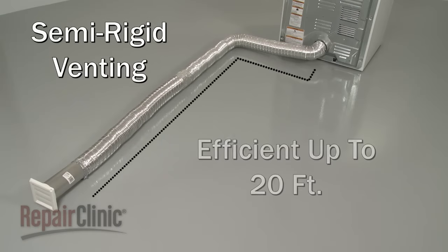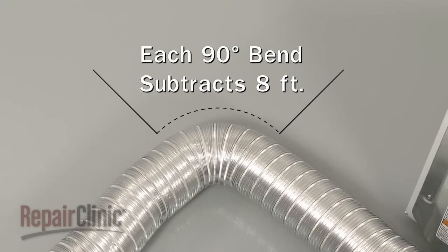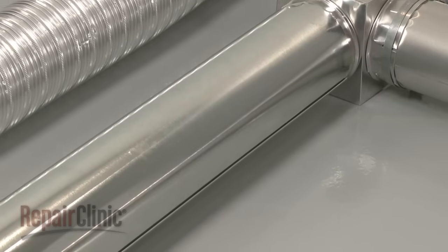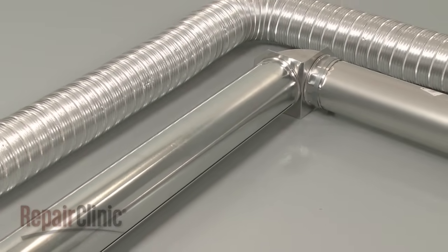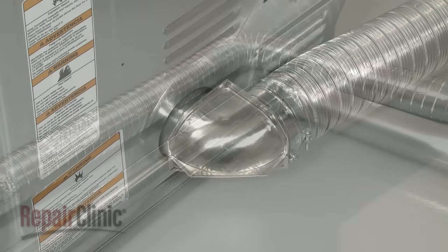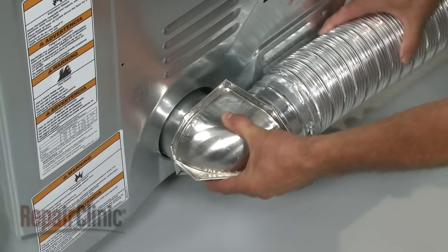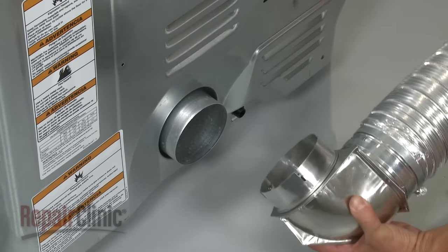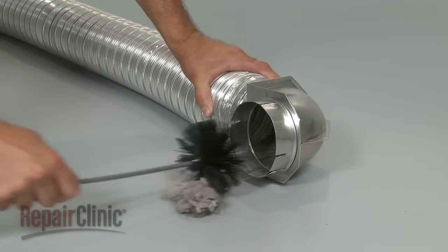This type of material is usually efficient up to 20 feet in length. Again, any bend will impede airflow. A 90-degree bend will subtract 8 feet from the allowable 20-foot total. Use only rigid or semi-rigid venting. Any other material may increase the risk of fire, as the lint in the vent could ignite during normal operation. Since an exhaust vent clogged with lint is the most common cause of restricted airflow, we recommend cleaning out the vent at least once a year.